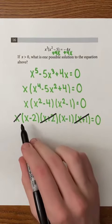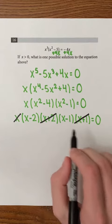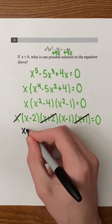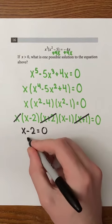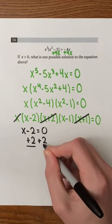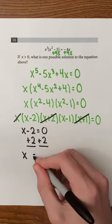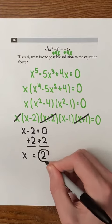Lastly, we can set x minus 2 or x minus 1 equal to 0 and then solve for x. If we set x minus 2 equal to 0 and then add 2 to both sides of the equation, we end up seeing that 2 is a possible solution that's greater than 0.